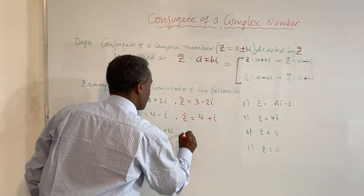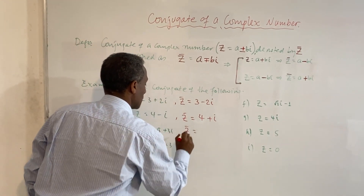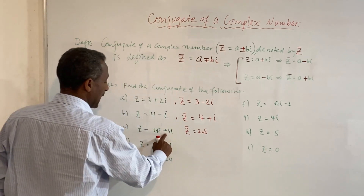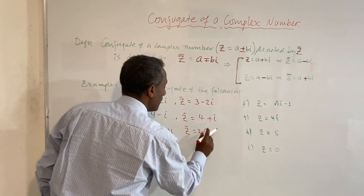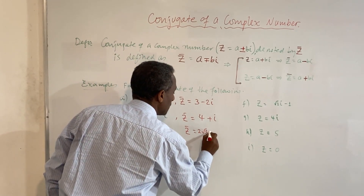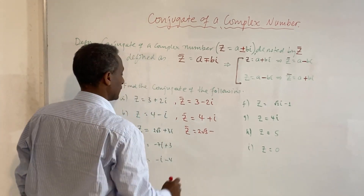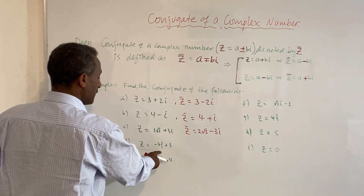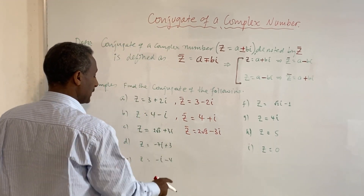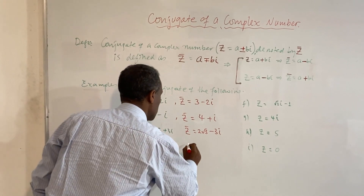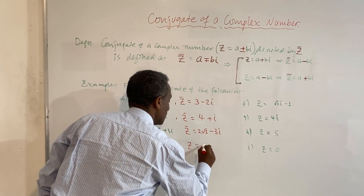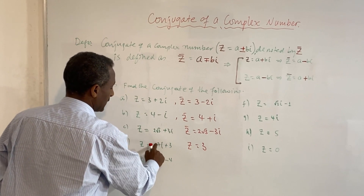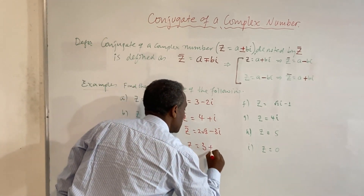Another example: if z equals 2 root 3 plus i, then z-bar equals 2 root 3 minus i. And if z equals 7i plus 3, we rewrite it as 3 plus 7i, so z-bar equals 3 minus 7i.